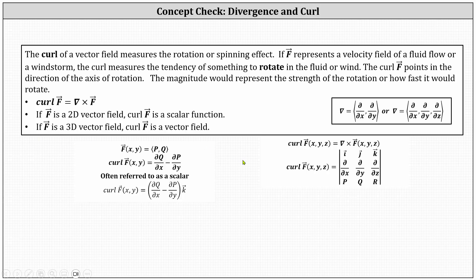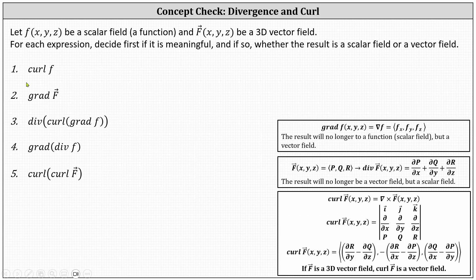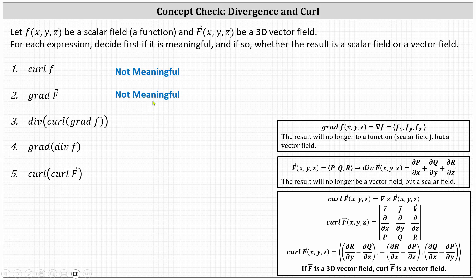Going back to our questions: for number one, we have the curl of the function f. We don't determine the curl of a function — we determine the curl of a vector field — and therefore number one is not meaningful. Number two, we have the gradient of the vector field F. We do not determine the gradient of a vector field; we determine the gradient of a function f. Number two is also not meaningful.